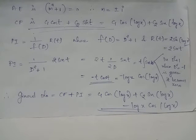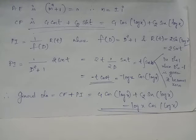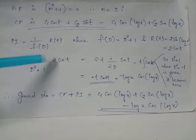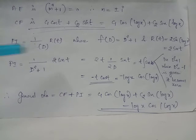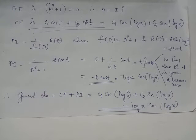Now we find the particular integral for equation 2, which is PI = 1/f(D) acting on 2 sin t, where f(D) equals D² + 1. The constant 2 can be taken outside the operator. Since sin t is a trigonometric function with coefficient of t equal to 1, we can replace D² with negative 1².